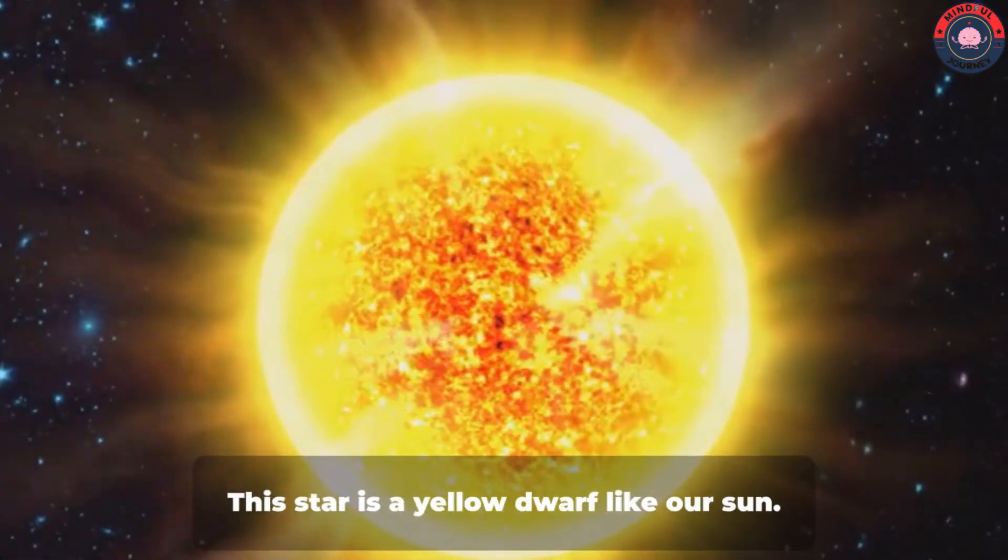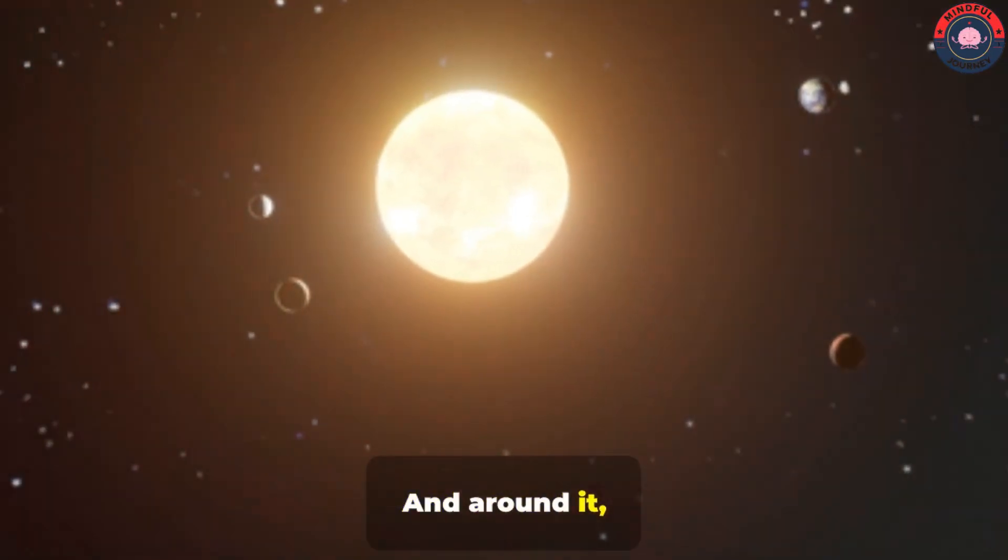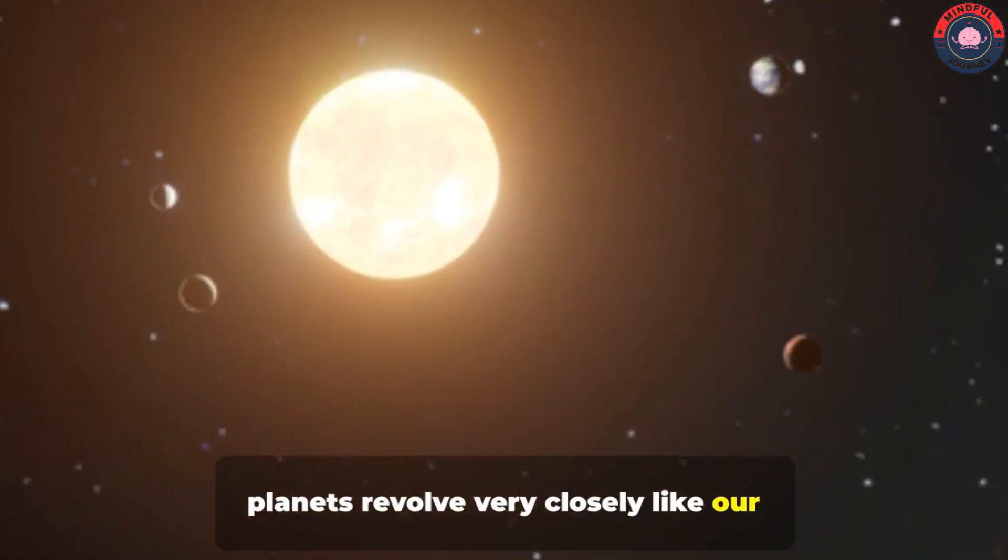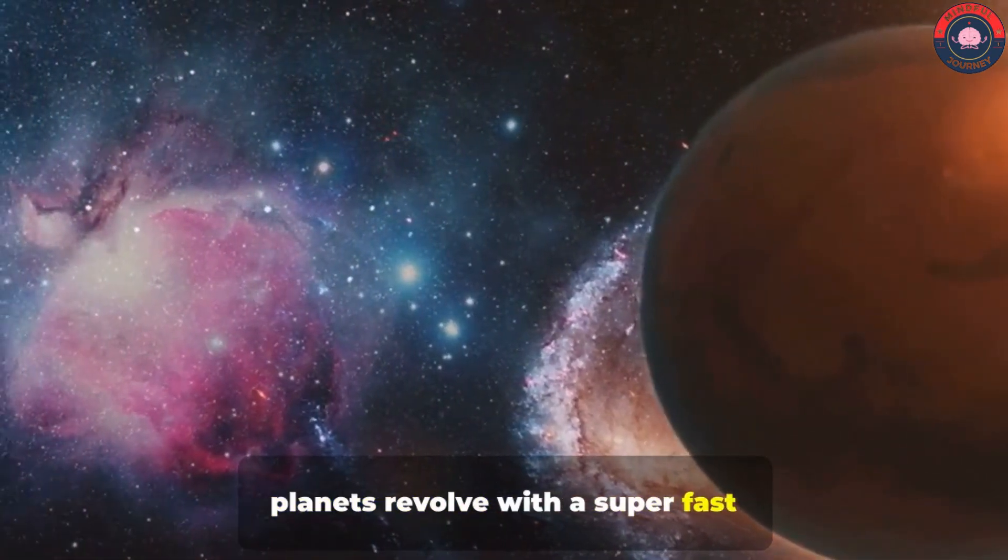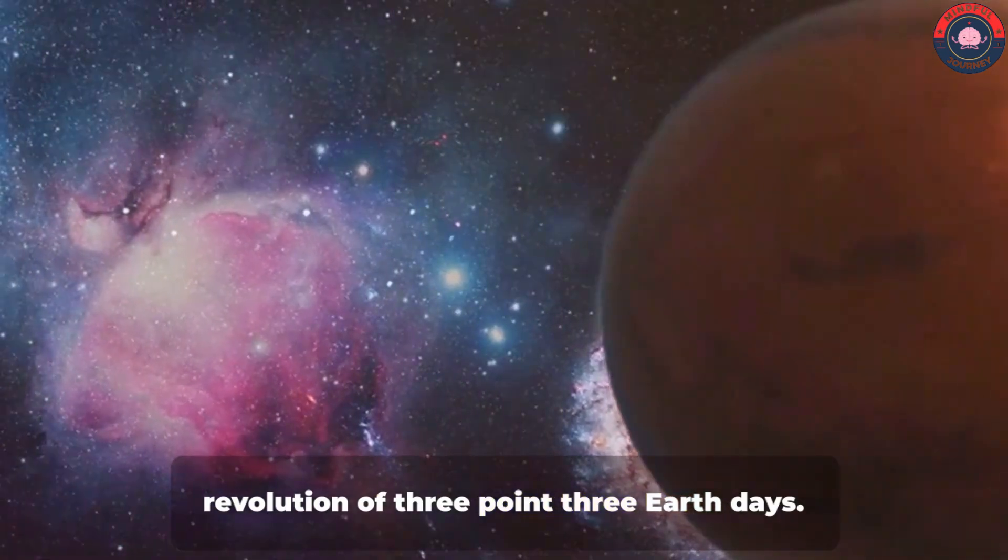This star is a yellow dwarf like our sun, and around it, planets revolve very closely like our solar system. But the difference is that in this system, planets revolve with a super-fast revolution of 3.3 Earth days.